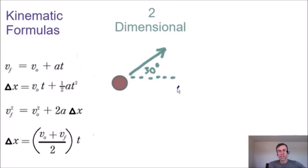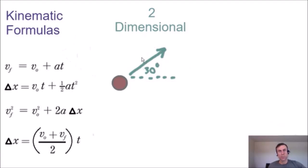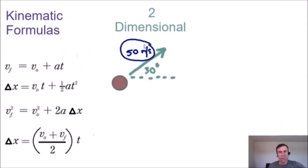Let's start by taking a look at this ball that's being launched at an angle of 30 degrees above the horizontal at a speed of 50 meters per second. What we need to do is separate this velocity of 50 meters per second into a horizontal component and a vertical component.